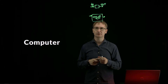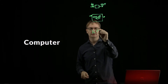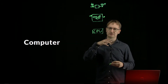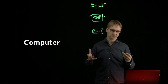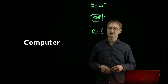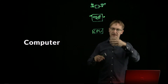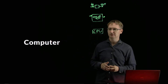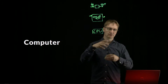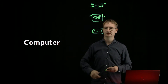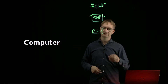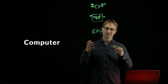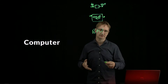Inside the computer there is a special unit called the CPU — the processor. We can say it's like the brain of the computer. What it does is take small, simple calculations and execute them very quickly and very often. During one second it can do millions or even more executions.